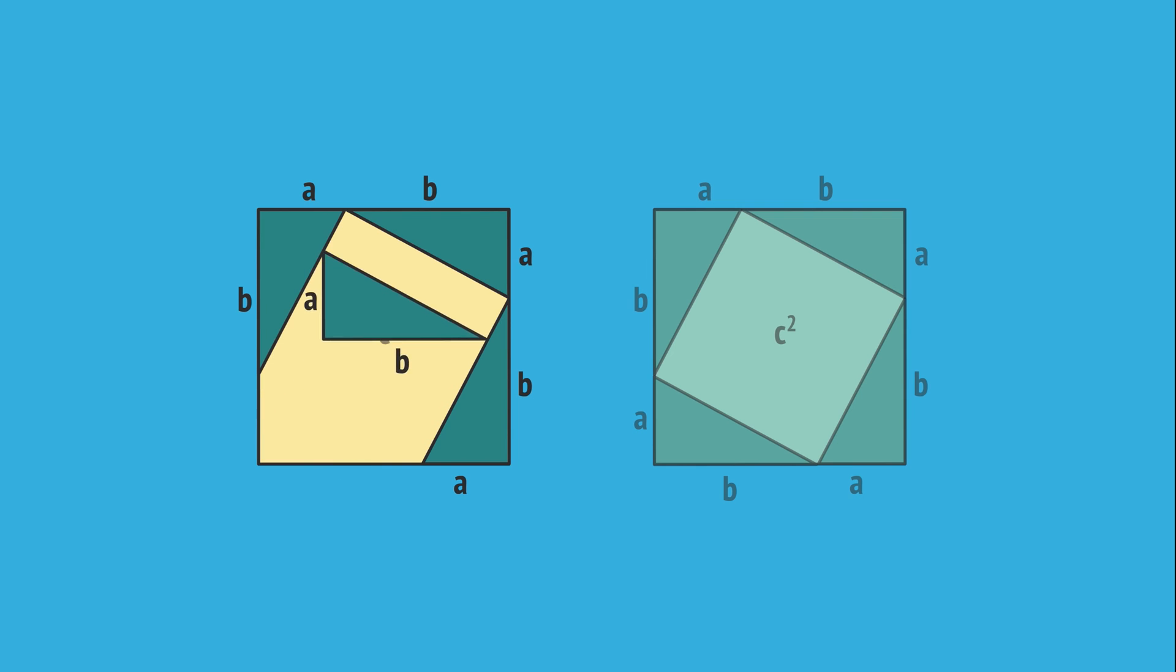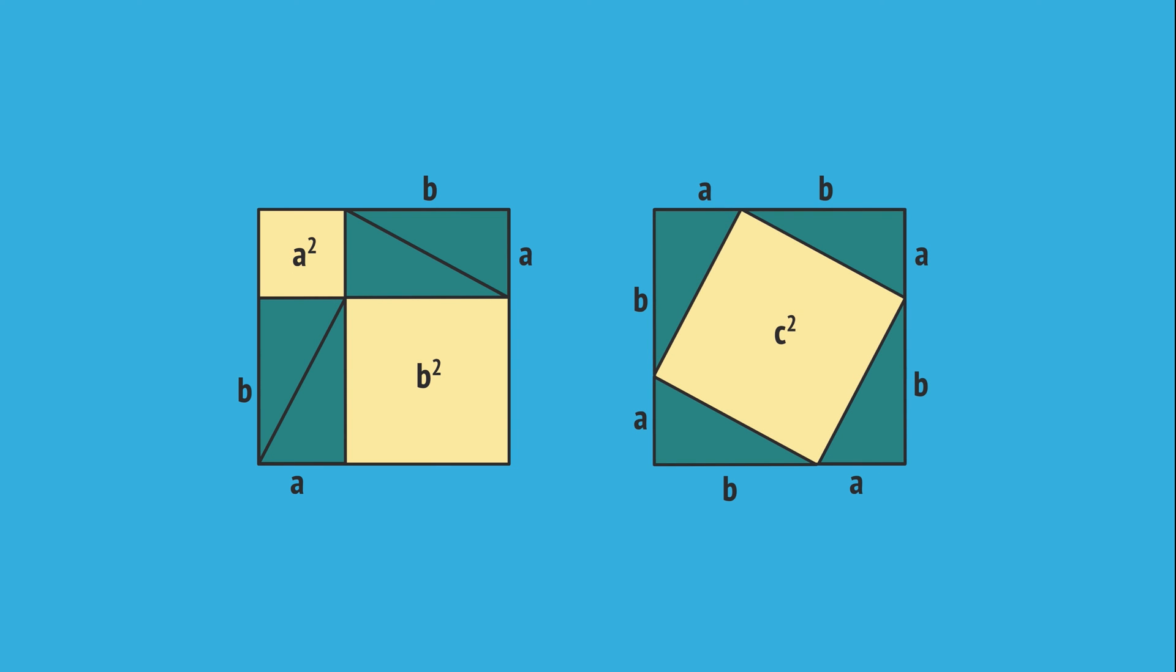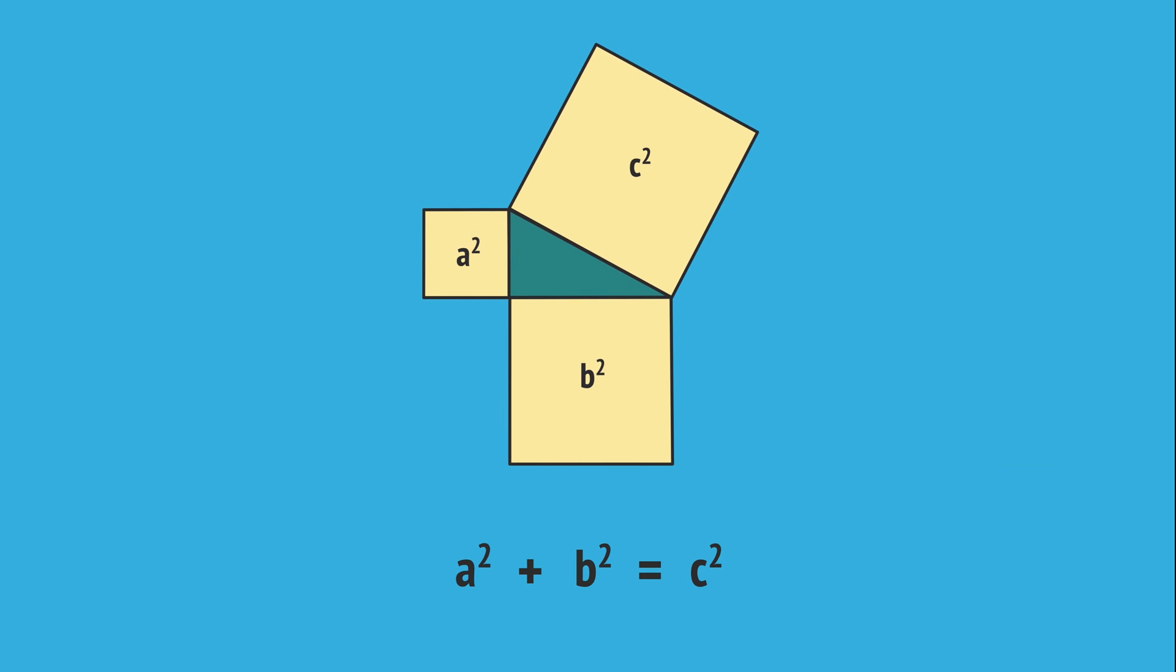Now let's rearrange the green triangles by sliding them within the larger square frame. This gives two yellow squares. One with an area of A squared, and the other with an area of B squared. But if we compare to our original arrangement, the total yellow areas in these two diagrams must be equal, as we've only shifted the triangles within the same square frame. So A squared plus B squared is equal to C squared, which proves Pythagoras's theorem.